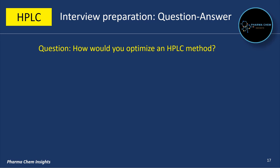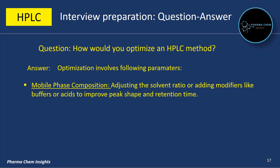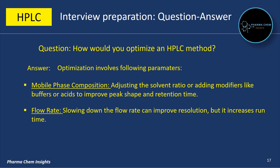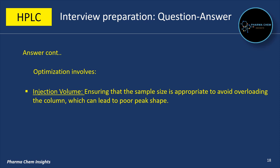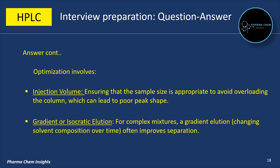Next question: how will you optimize an HPLC method? Optimization involves the following parameters: mobile phase composition — adjusting the solvent ratio or adding modifiers like buffers or acids to improve peak shape and retention time; flow rate — slowing down the flow rate can improve resolution but increases run time; column temperature — increasing temperature can reduce retention times and improve peak shape but may also affect resolution; injection volume — ensuring the sample size is appropriate to avoid overloading the column, which can lead to poor peak shape; and gradient or isocratic elution — for complex mixtures, gradient elution (changing solvent composition over time) often improves separation.